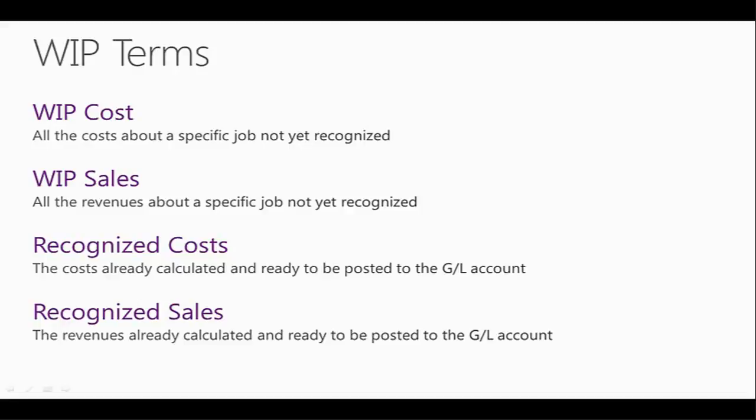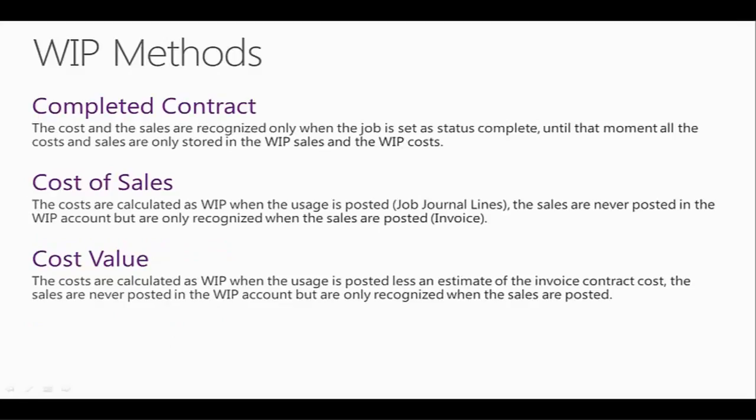WIP cost is necessary to identify all the costs about a specific job, but those are not recognized yet. WIP sales is necessary to identify all the revenues about a specific job, but those are not recognized yet. Recognized costs indicate the cost already calculated and ready to be posted to the GL account. Recognized sales indicate the revenues already calculated and ready to be posted to the GL account. In Dynamics NAV 2013, we have different WIP method calculations.